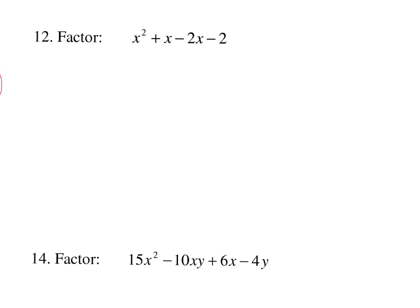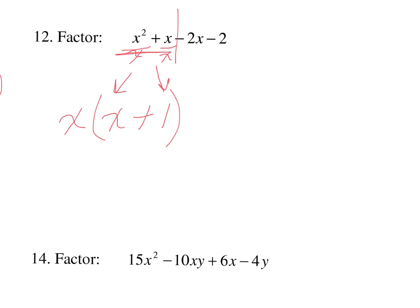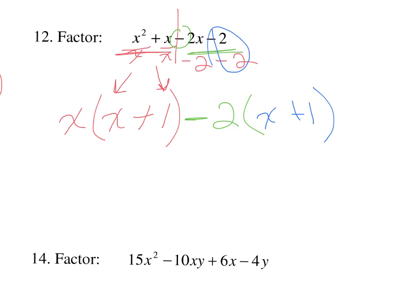Again, there's nothing common across all four terms, so we separate it in half. What's common in the front? They both have at least one X. Factoring out X gives X plus 1, because X squared divided by X is X, and X divided by X is 1. The negative sign comes down. These two back terms have a 2 in common, but because of the negative sign, we're actually factoring out negative 2. Dividing by negative 2: negative 2 cancels leaving X; and the second term reduces to positive 1 because negative divided by negative is positive. X plus 1 is common — bring it to the front, cancel it out of both terms, and you're left with X minus 2.